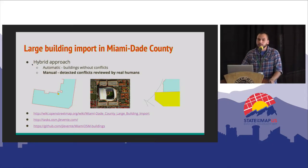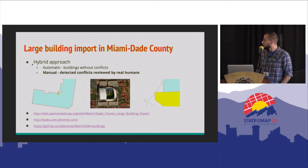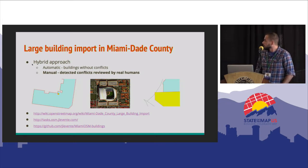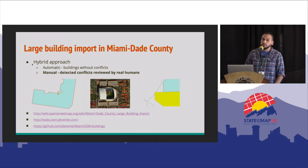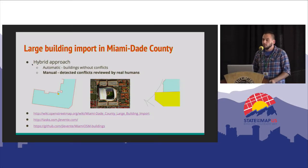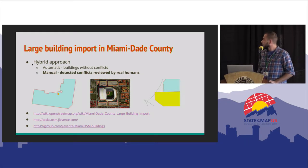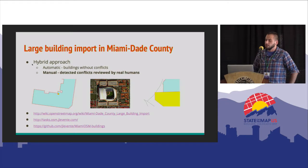The buildings that needed to be manually reviewed had some kind of conflict, but nothing major. On the left side of the figure, you see a self-intersection, which in its current state cannot be uploaded to OpenStreetMap. Sometimes buildings in our import set were overlapping with existing OpenStreetMap buildings, so we needed humans to take care of that, as well as buildings overlapping with the road network.